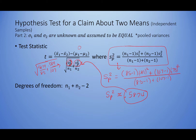For the degrees of freedom when we pool our variances, we add our sample sizes together and subtract 2: df = n₁ + n₂ − 2 = 85 + 107 − 2 = 190 for this particular situation.